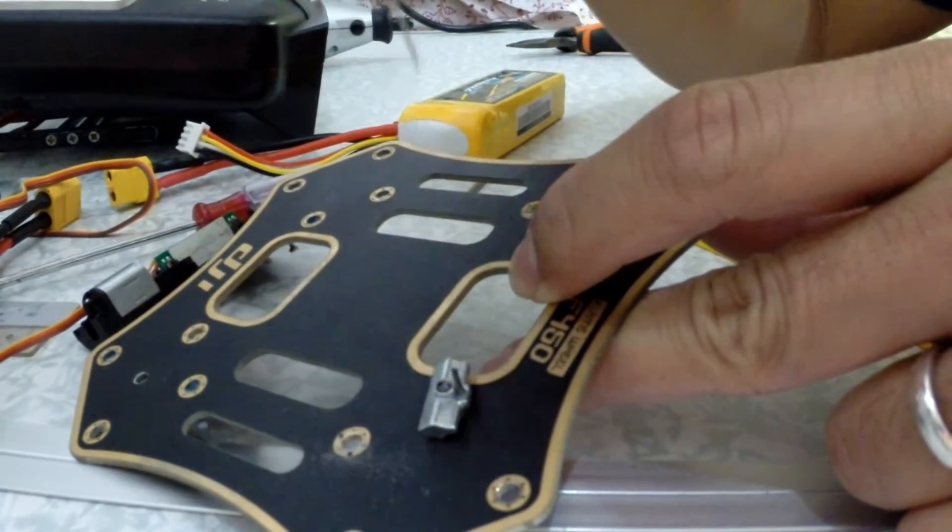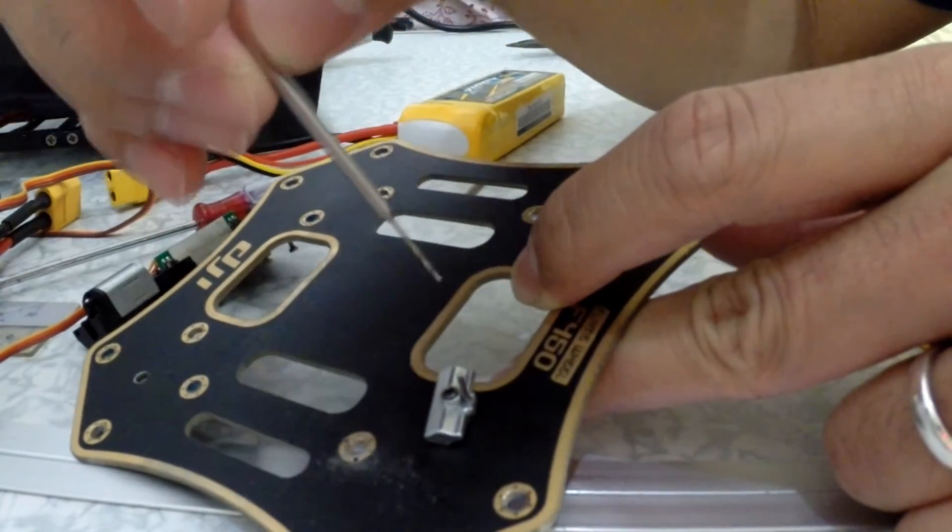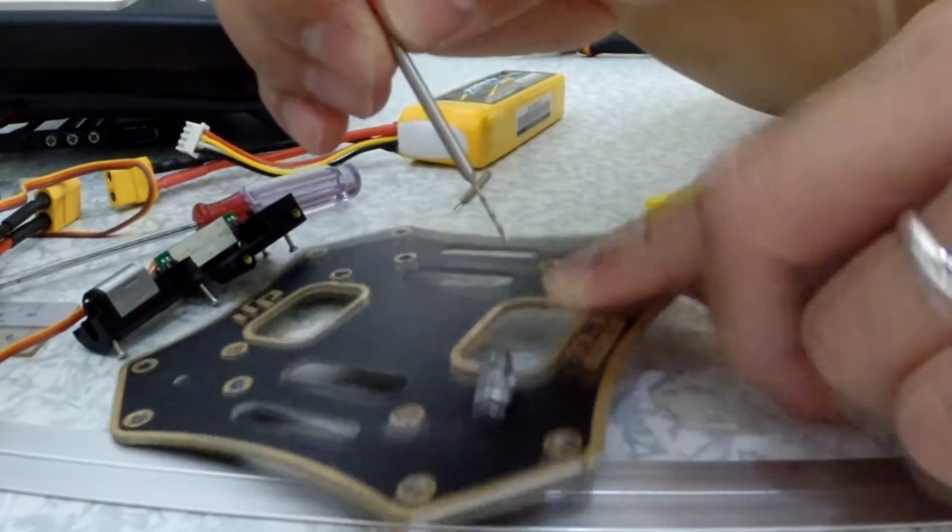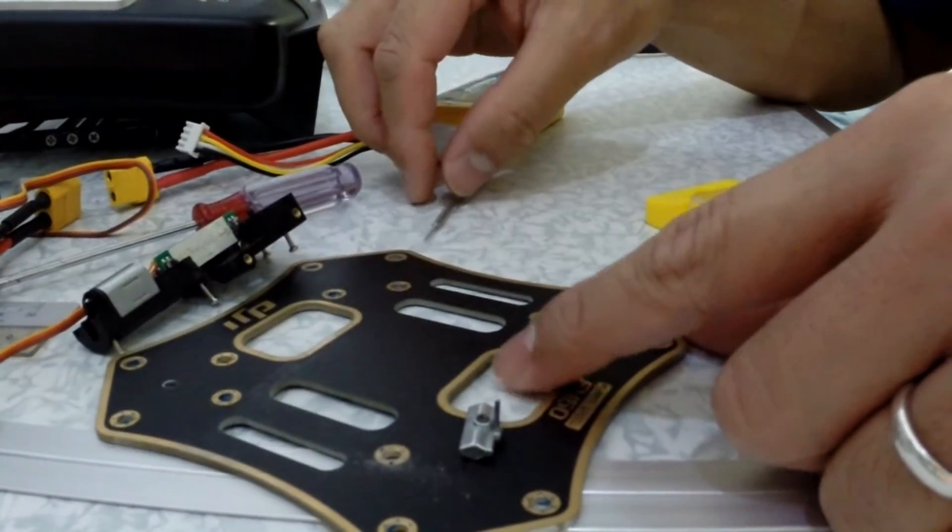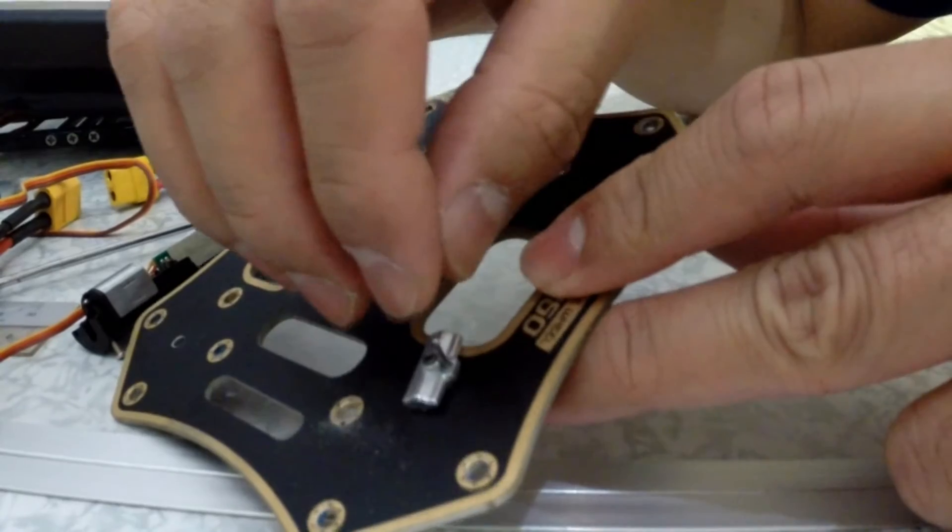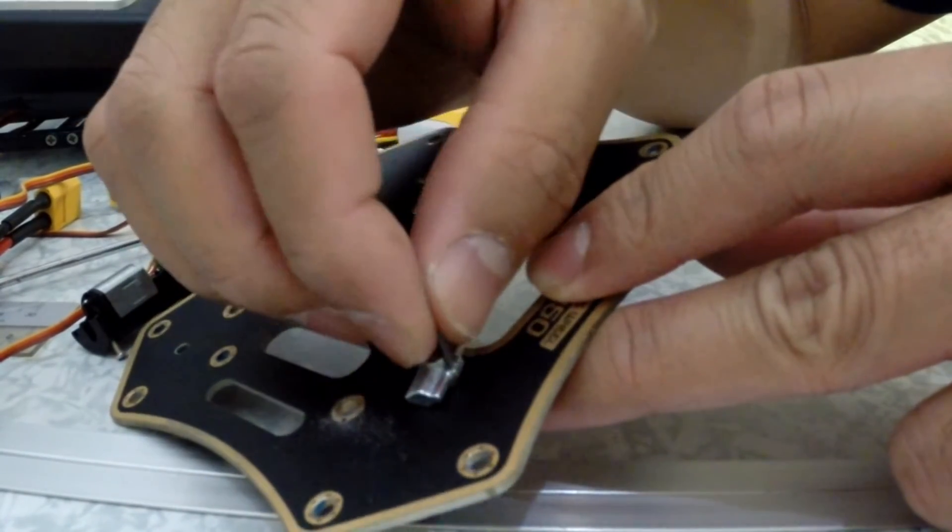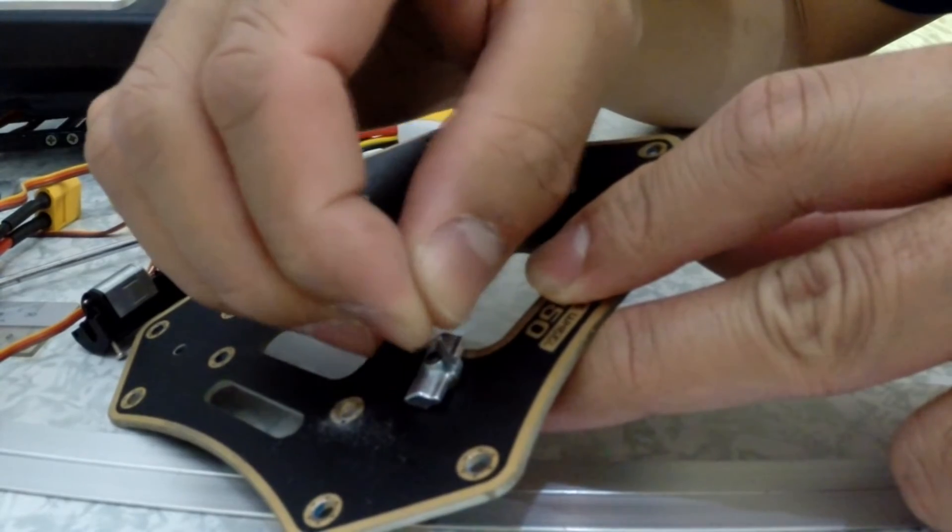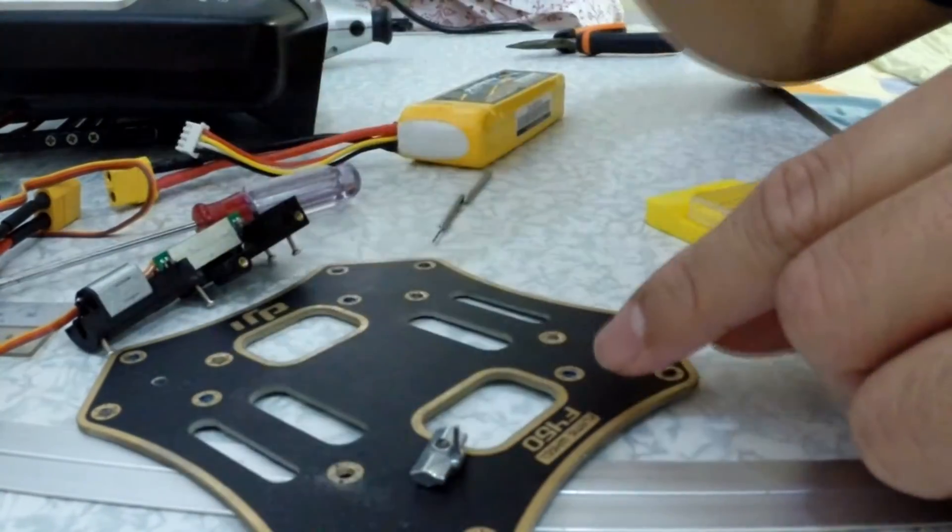So now you're gonna finish it using this 0.8mm drill. The reason why it's better to drill smaller first is because it will become like a press fit, so it won't easily move. Then after that, you need to use some glue.